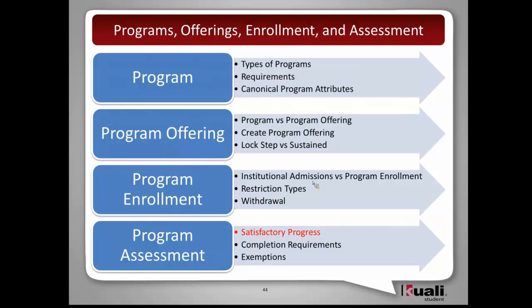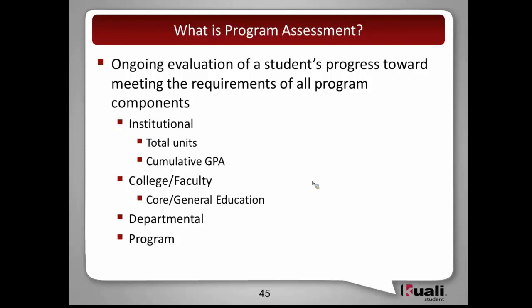Now jumping into program assessment — talking about satisfactory progress, completion requirements, and the concept of exemptions. Program assessment is an ongoing evaluation of a student's progress towards meeting the requirements of a program, and it can happen at all levels: the institutional level, the college or faculty level, the departmental level, or even at the program level. As Steve said, if it's rule-based and can be defined by rules, it can be assessed.